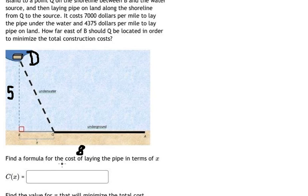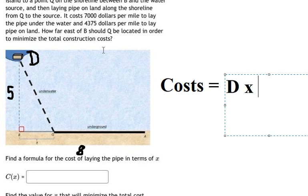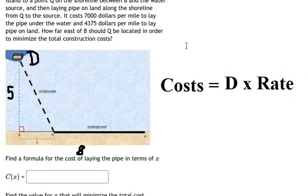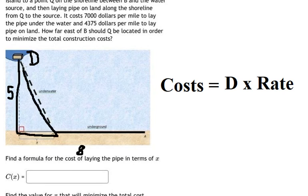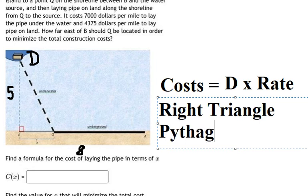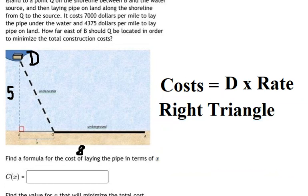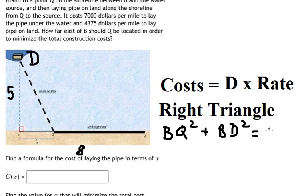The question wants us to find a formula for the cost of laying the pipe in terms of s. We know that cost equals distance multiplied by rate. We need to find the distance from Q to D. Looking at D and Q, we can see this forms a right triangle, so we can use the Pythagorean theorem. So we have BQ squared plus BD squared equals DQ squared.